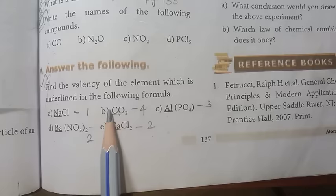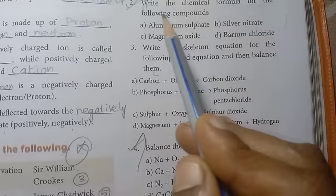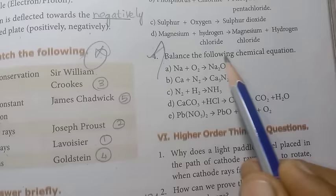Write the names of the following compounds: CO, N2O, NO2, PCl5. This question is important. Answer the following: First, find the valency of the element which is underlined in the following formula. Second, write the chemical formula for the following compounds: aluminum sulfate, silver nitrate. Fourth, balance the following chemical equation.